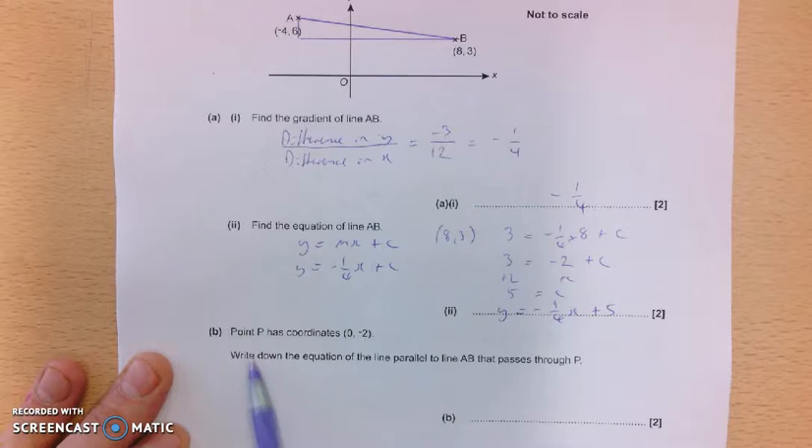And then finally, our point P has coordinates 0, minus 2. So 0, minus 2 is, of course, somewhere on the y-axis. OK, so that is going to be our y-intercept.